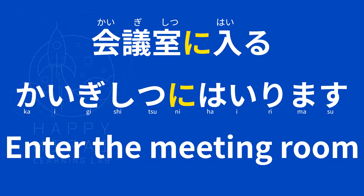Do you know what you say when you enter a meeting room if you work for a Japanese company? You need to knock the door and say 失礼します (shitsurei shimasu) — this is very important. It means 'Excuse me, I'm going to enter the room.' 失礼します is a very important phrase to use.